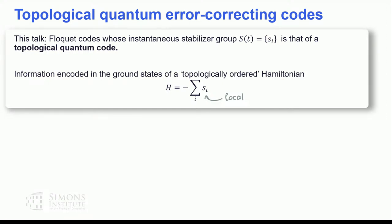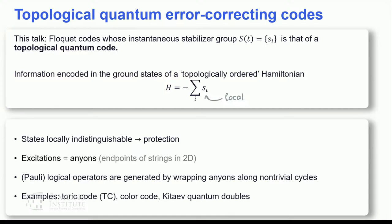In this talk, I'm going to discuss Floquet codes, or dynamic codes, where the instantaneous stabilizer group at each step is that of a topological code. One thing to emphasize is that upon measuring the stabilizers, the excitations are projected onto the natural excitations of these topological models — endpoints of strings in two dimensions and boundaries of membranes in three dimensions. We get logical operators by wrapping strings around non-trivial cycles in two dimensions and sheets around surfaces in three dimensions.